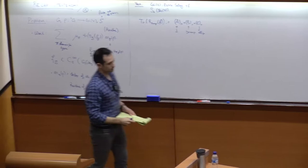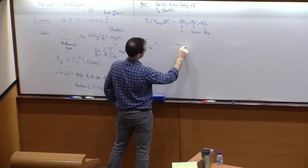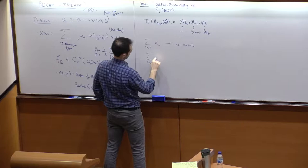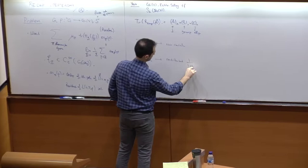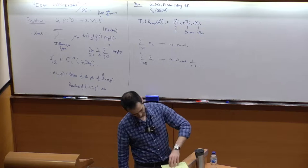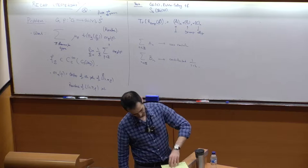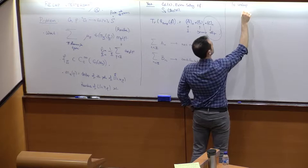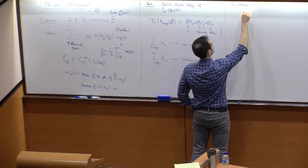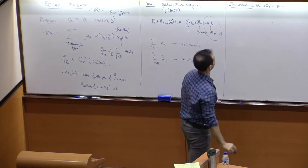The formula said the trace of the cusp form part, where f is a specific test function — I'll put an n here to indicate we're looking at the nth Hecke operator — was a sum of three terms: A(n) + B(n) + C(n). A(n) was the contribution of the trivial conjugacy class (identity), B(n) was the contribution of hyperbolic and unipotent classes, and C(n) was the elliptic conjugacy class.